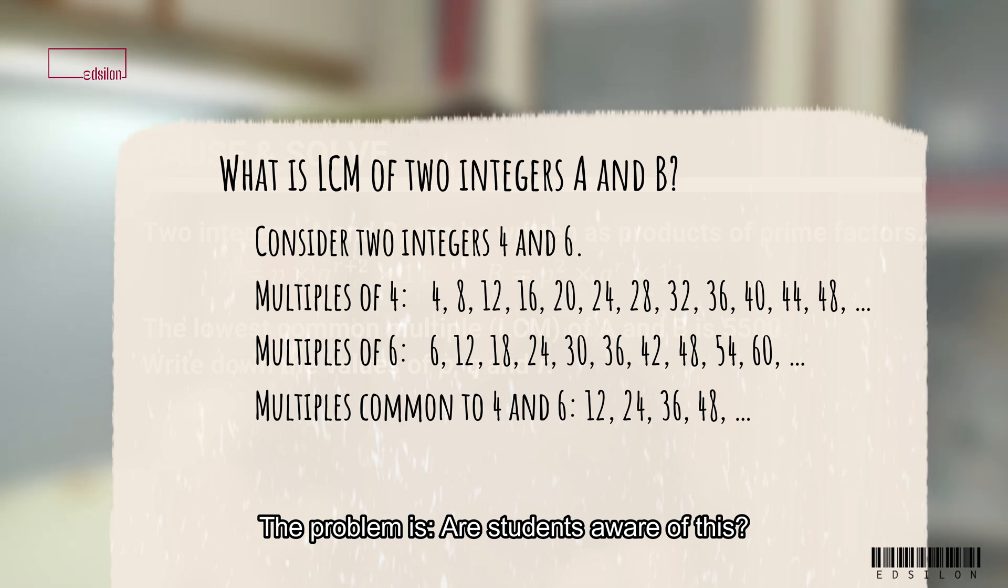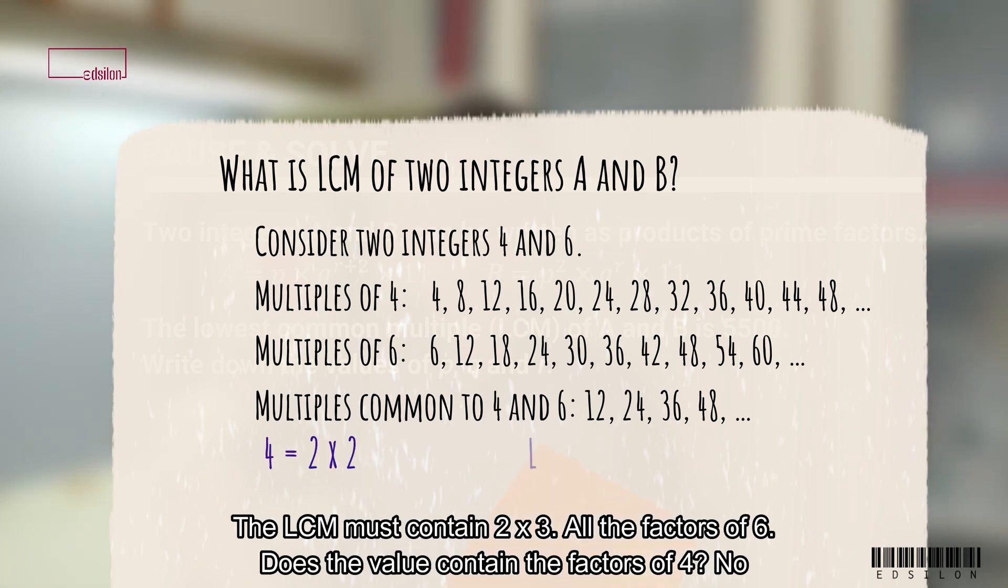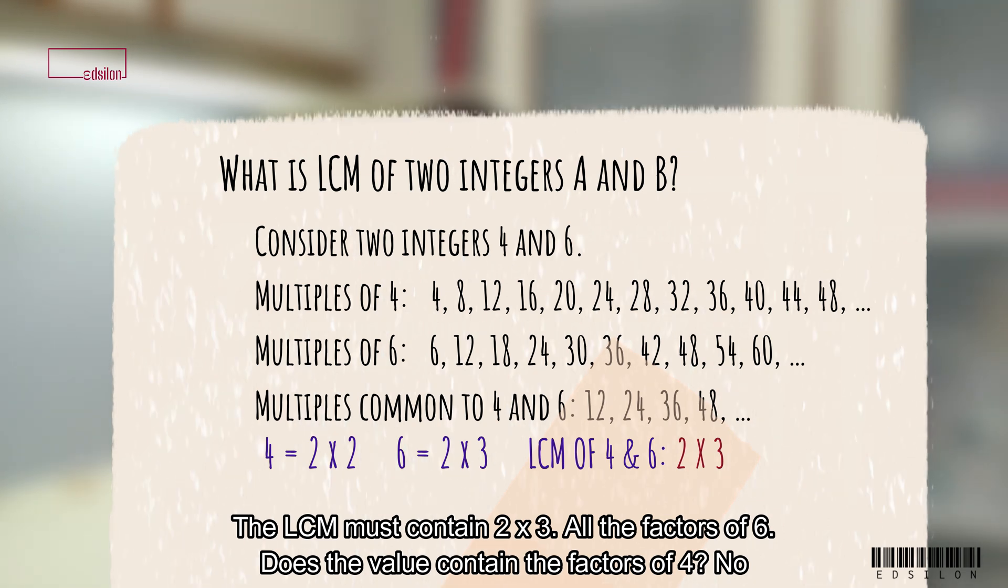The problem is, are students aware of this? Let's revisit LCM of 4 and 6 example. The LCM must contain 2 times 3 or the factors of 6. Does the value contain the factors of 4?